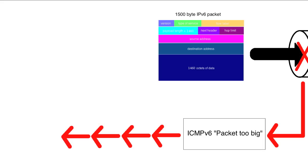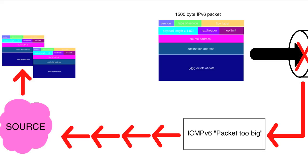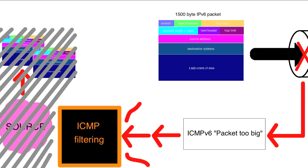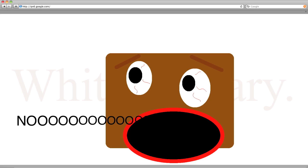If the ICMPv6 message makes it back to the source, then we're good — it will trigger the local TCP instance to use a smaller MTU, and the packet will go through the next time. If, however, at any point along the way ICMP filtering exists, then the packet-too-big message will get lost. This might happen at a point not under the control of the source or destination, and the packet is not retransmitted and service failure results.